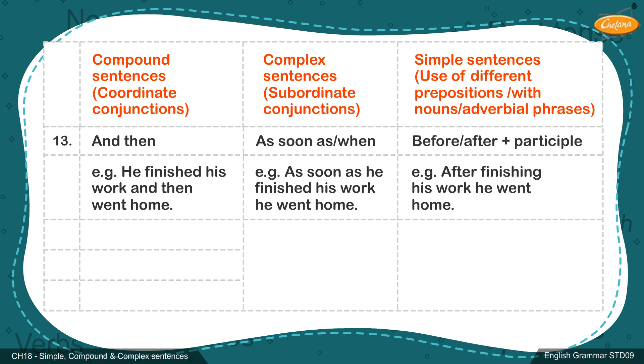Compound sentence conjunctions: 14. Either or. 15. Neither nor. 16. Not only but also.